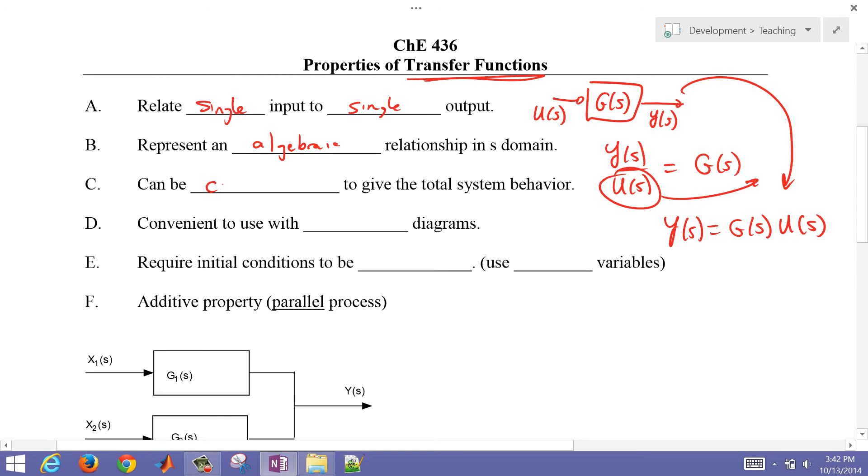They can also be combined to give a total system behavior, and we'll show that down here with some examples. They're also convenient to be used with what are called block diagrams. So if we have a controller, this would be a block diagram, for example, where you have a PID controller, you might have your system, and then your feedback control.